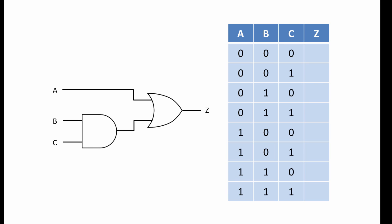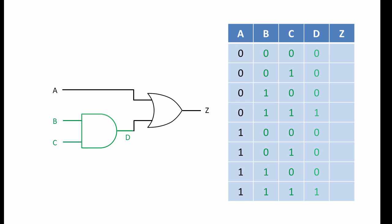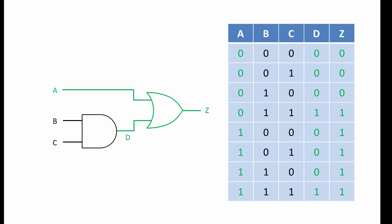Here is another example. Perhaps you would like to give this one a go yourself. Pause the video now if you want to give it a try and I will show you the solution in a few moments. To solve this one, we will consider intermediate point D. Each value of D comes from passing pairs of values for B and C through an AND gate. And then each value of Z comes from passing pairs of values of D and A through an OR gate.